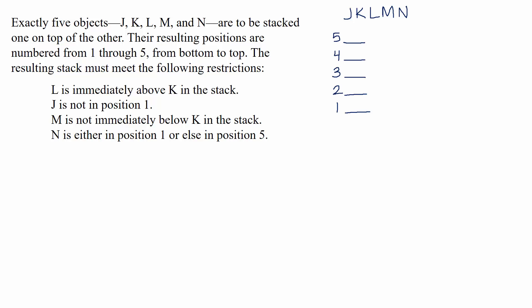Our first rule is that L is immediately above K in the stack. There are always various ways to notate different kinds of rules — we like putting a pair in a box like this. Our second rule is that J is not in position one. Whenever we can mark a rule directly in our diagram, it's a good idea to do so instead of noting it off to the side. We can show that J isn't in position one by writing J with a line through it.